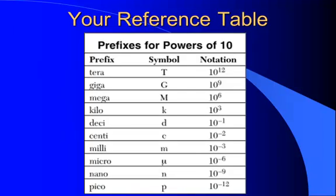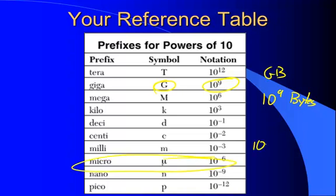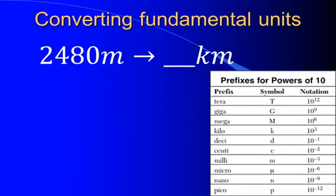Now, when we deal with all of these metric prefixes, our reference table in the front page in the bottom left has a table to help us out that tells us what all the prefixes mean. For example, a gigabyte of data — G, gigabyte — would be 10 to the 9 bytes. A micrometer would be 10 to the minus 6 meters. And we can use this to help us convert from one unit to another.